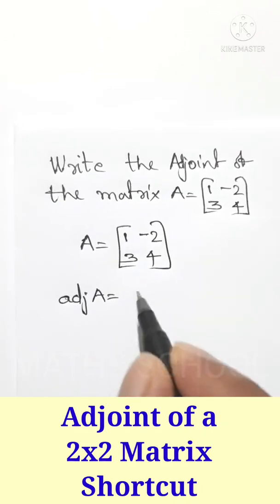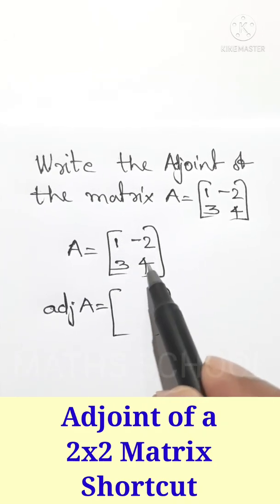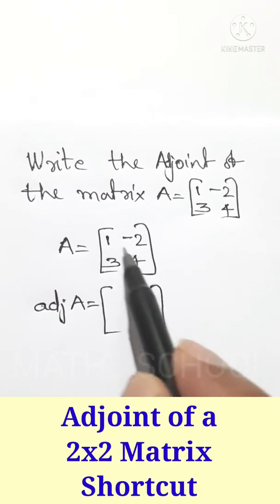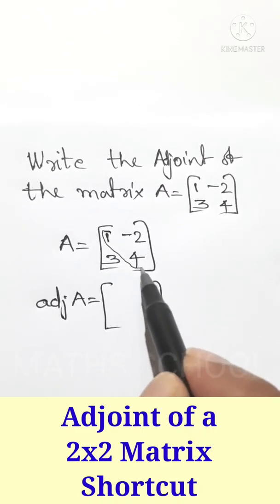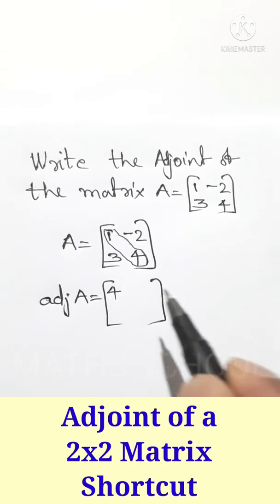Adjoint A equal to. First step is interchange the diagonal elements. Here the diagonal elements are 1 and 4. Diagonal elements are 1 and 4. Interchanging them we can write it as 4 and 1.